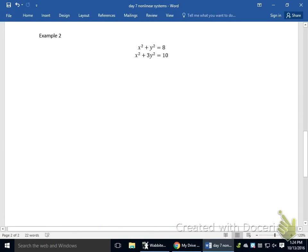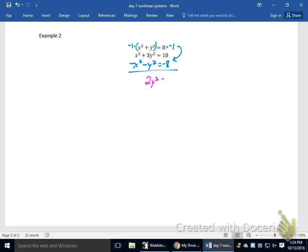Alright, here's another example. On this one, what I would do is actually multiply maybe this first one by negative 1 and take it away from the second one. So I'm going to do that really quick, so I'm just going to multiply both sides by negative 1. And rewrite it as negative X squared minus Y squared equals negative 8. And now I'll add that with the second given equation. So X squared minus X squared cancels. Here we're going to get 3Y squared minus Y squared is 2Y squared is equal to 10 plus negative 8 is 2.